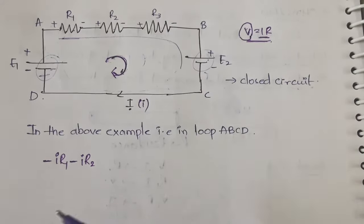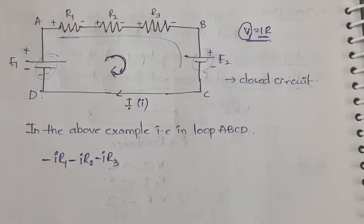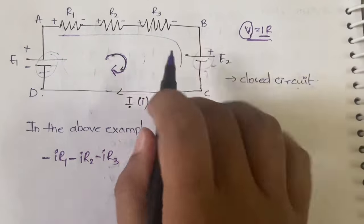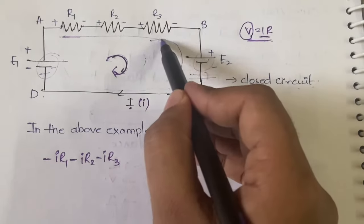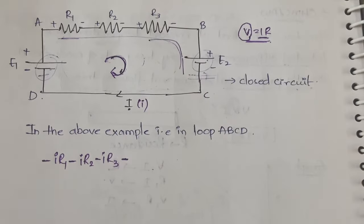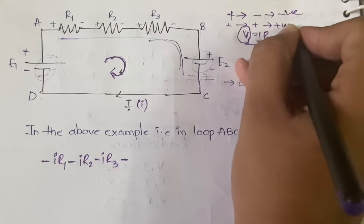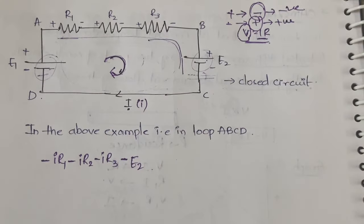At R3, again from positive to negative going in our direction, it is −iR3. Note: if there is a junction or more than one loop, you need to calculate the equivalent current — that's a different scenario I'll explain in the next video. Next, at E2 we are coming from positive to negative again, so the last terminal encountered is negative: the sign is −E2.